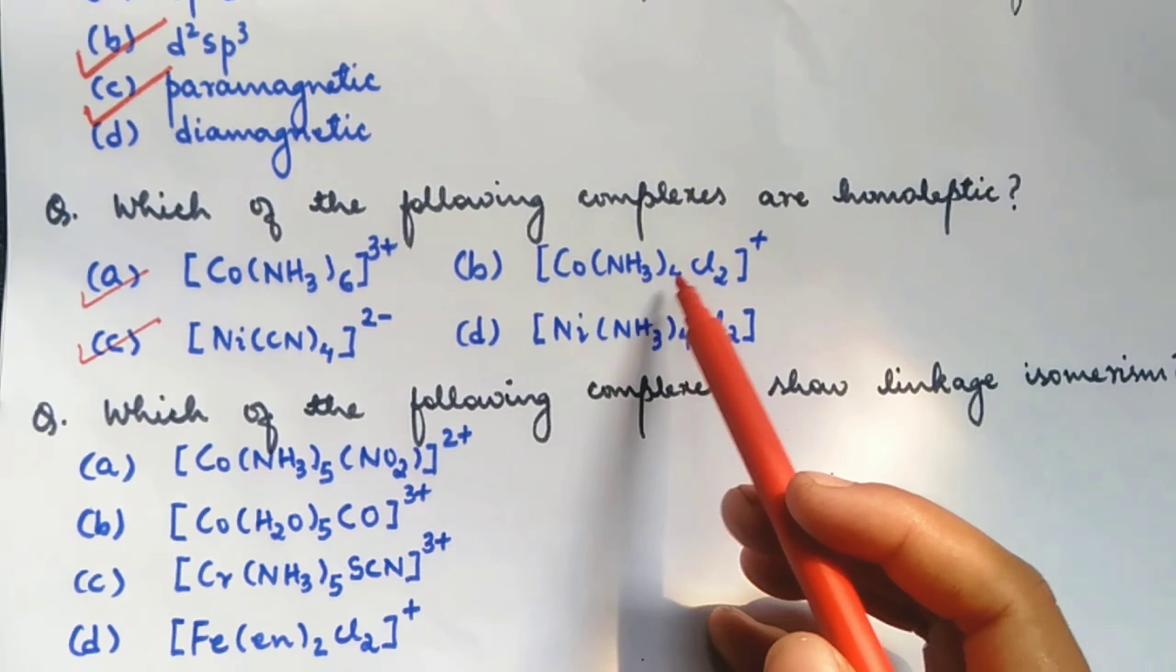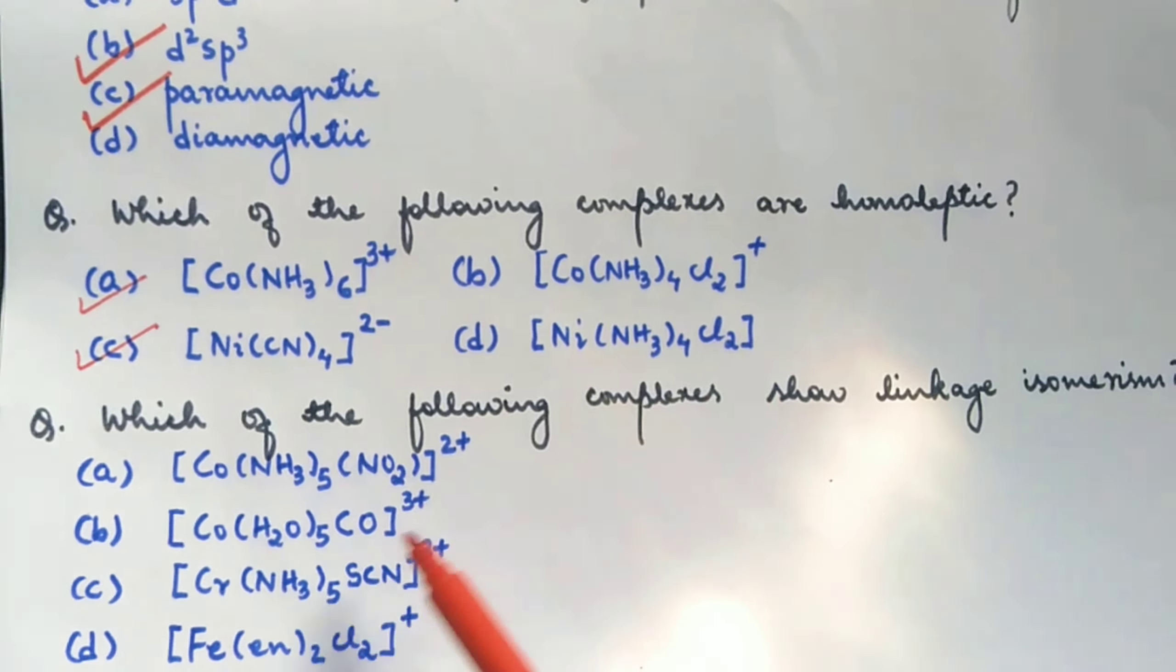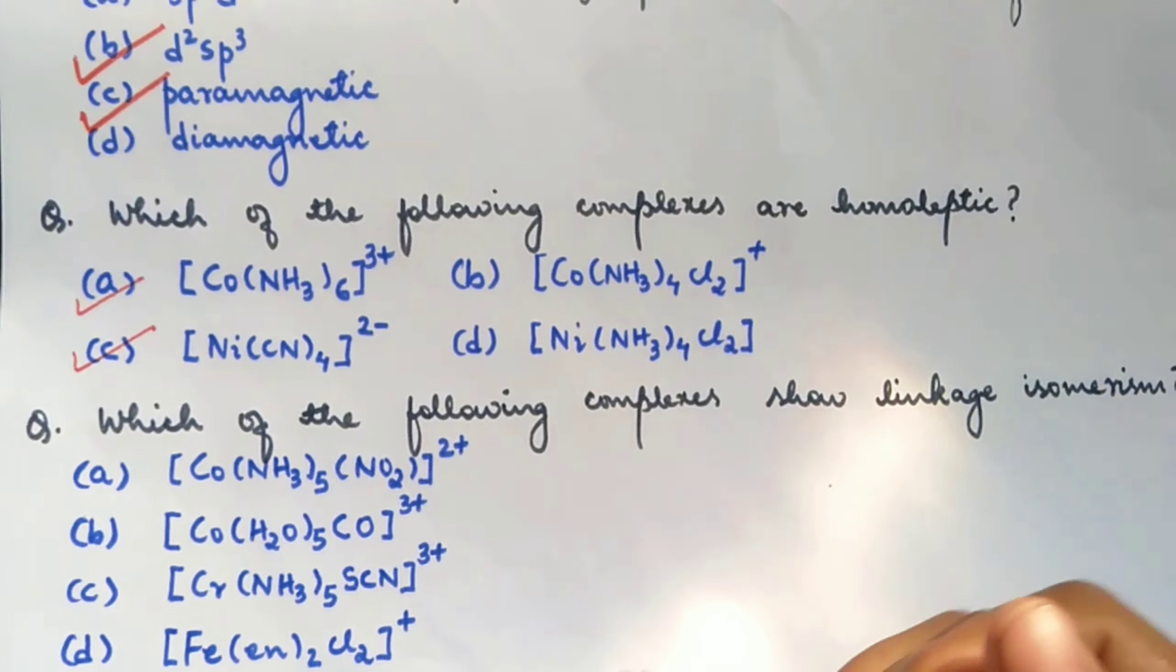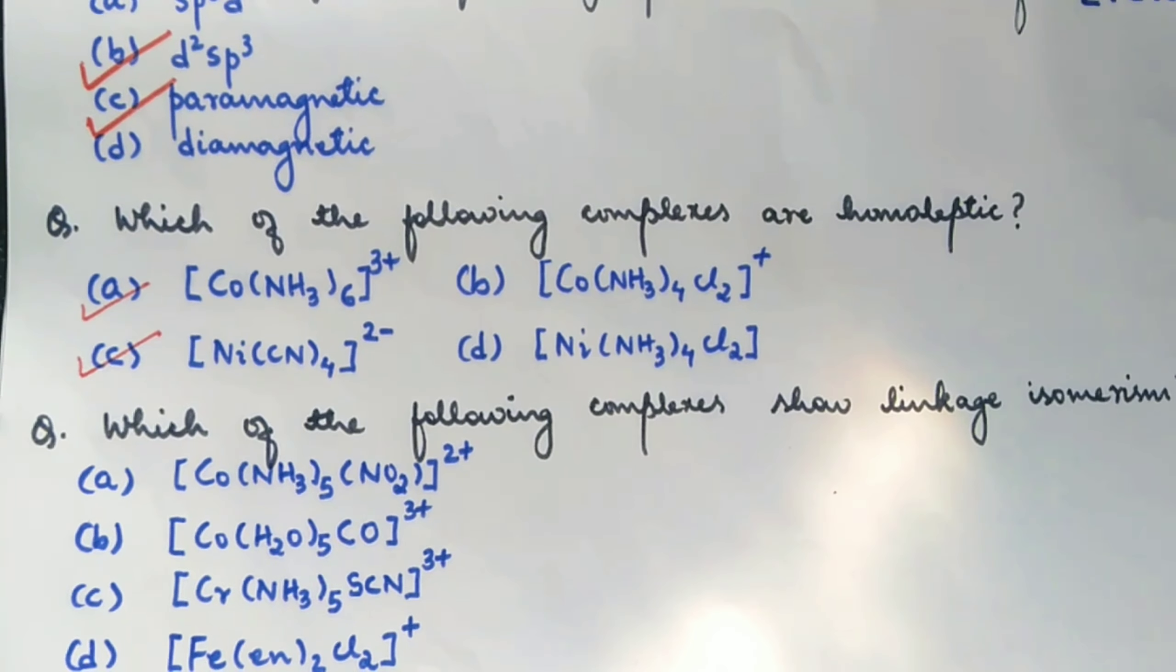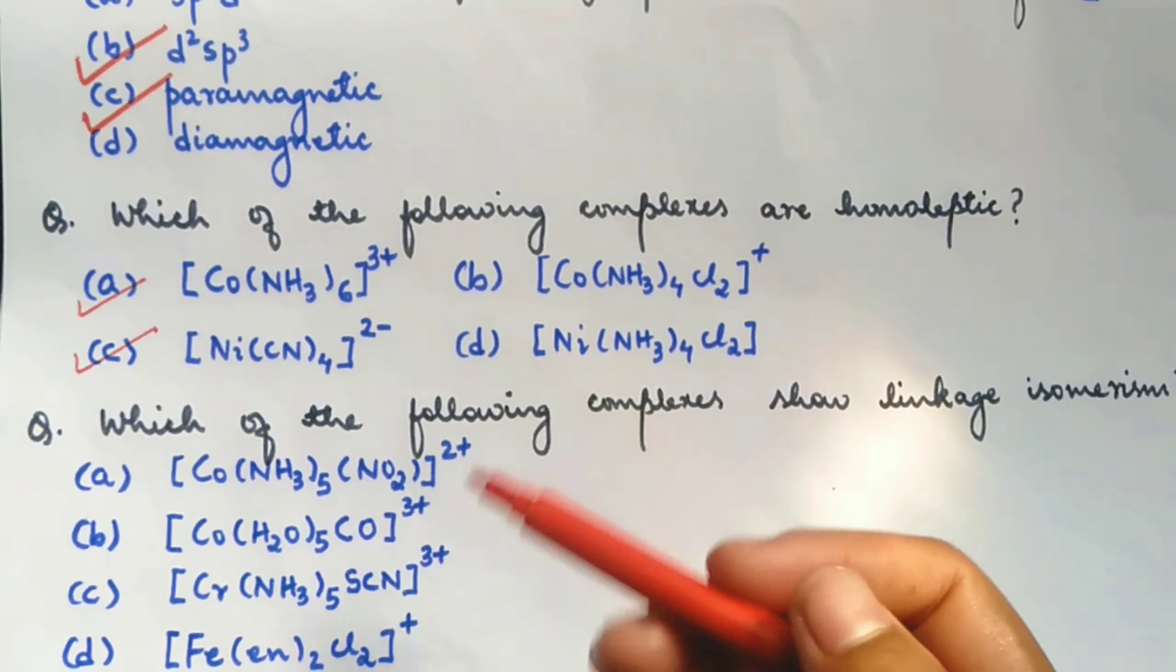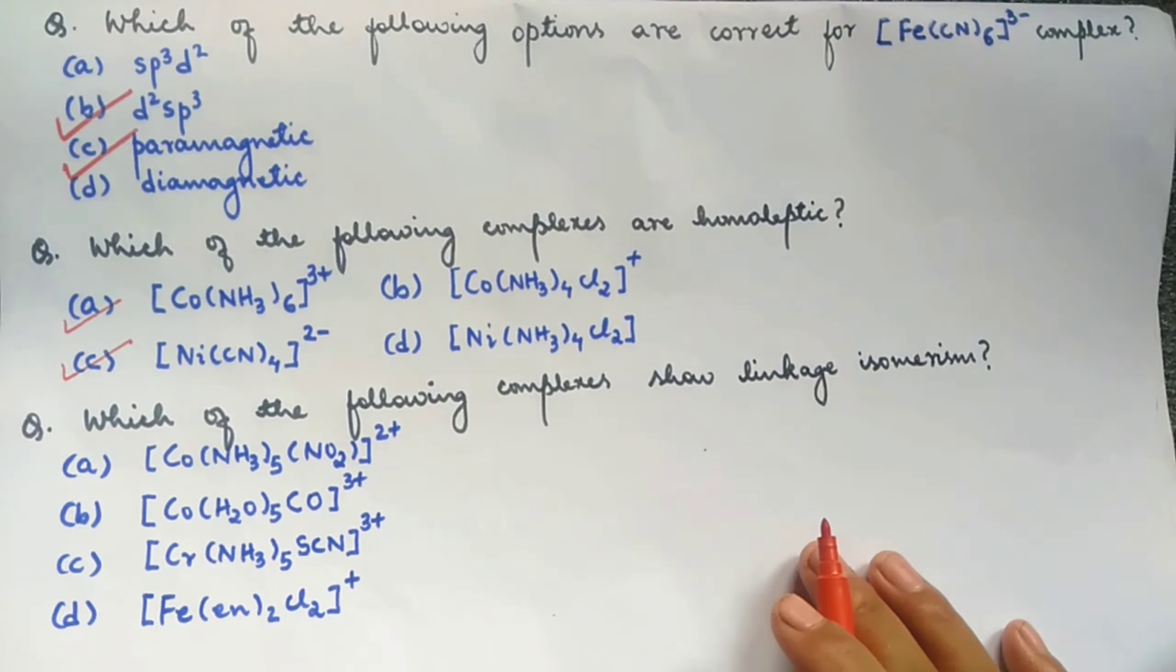Same type. But here we have different types of ligand. Clear. If they say heteroleptic means different type of ligand. So, for that, B and D would be the correct options.